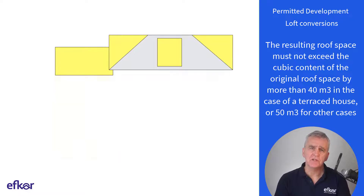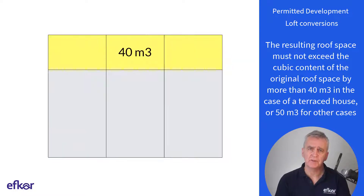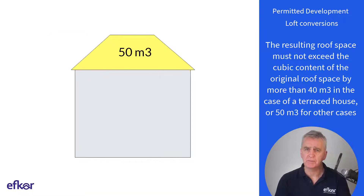The resulting roof space must not exceed the cubic content of the original roof space by more than 40 cubic meters for a terraced house, or 50 cubic meters for other house types.